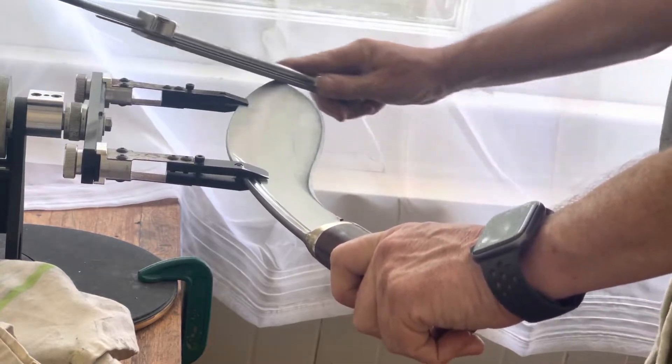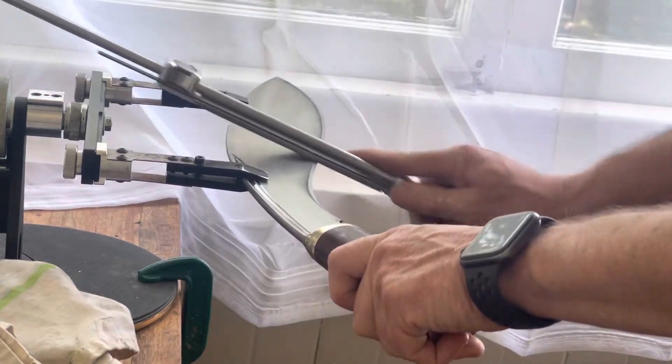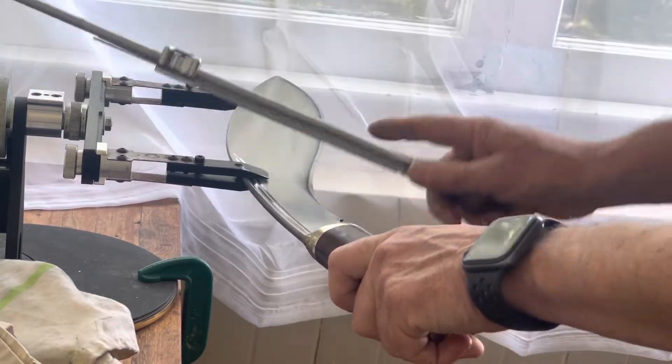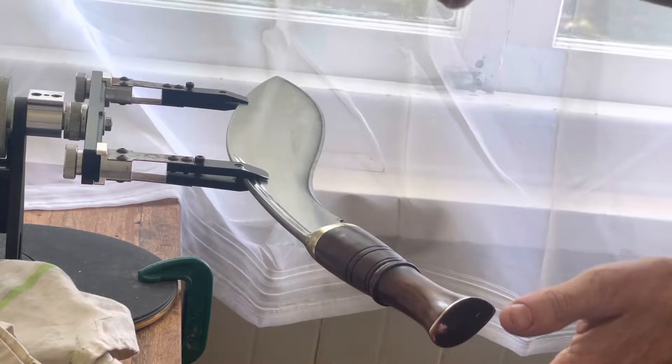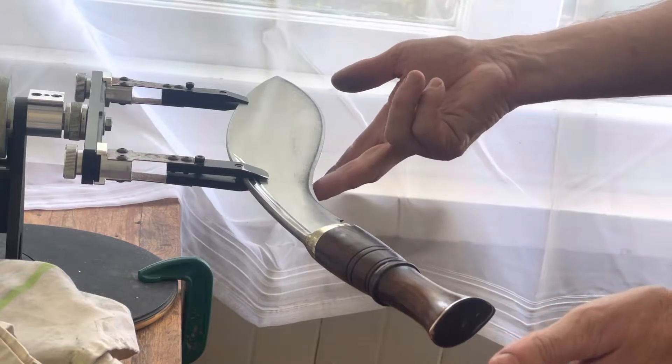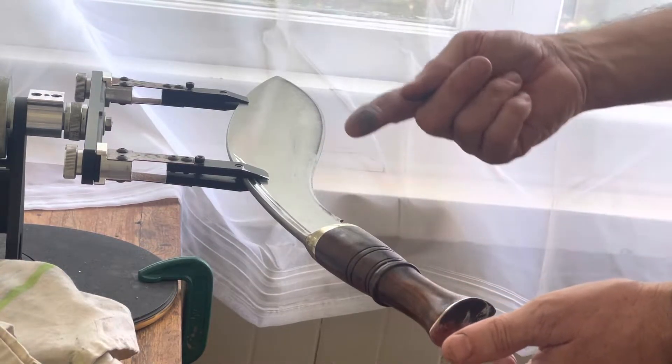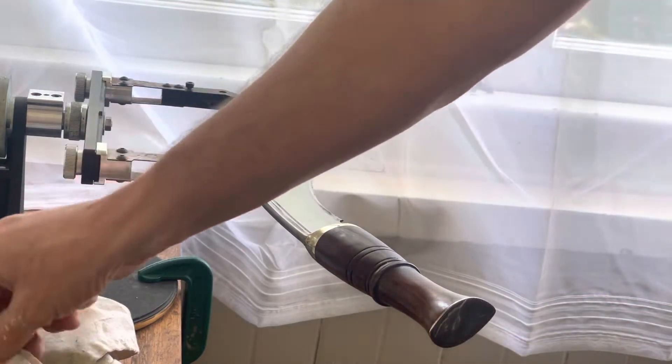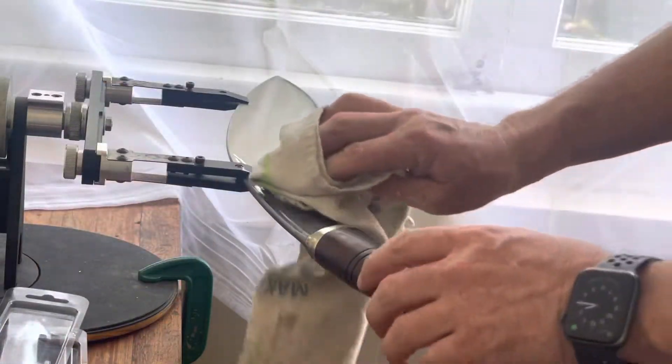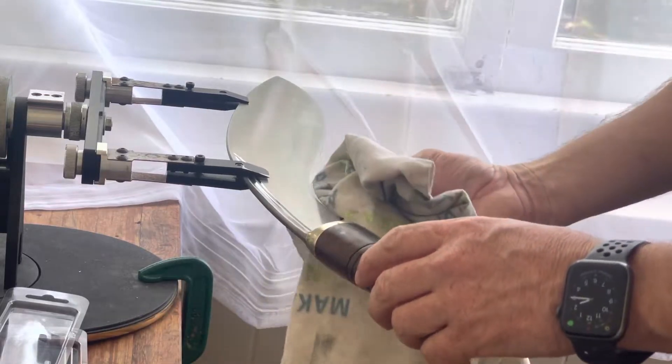Essentially you just keep going back and forth until you can feel a burr starting to occur. You'll notice if I'm careful - can you see that black? That's the metal slowly coming off. It does work slowly.